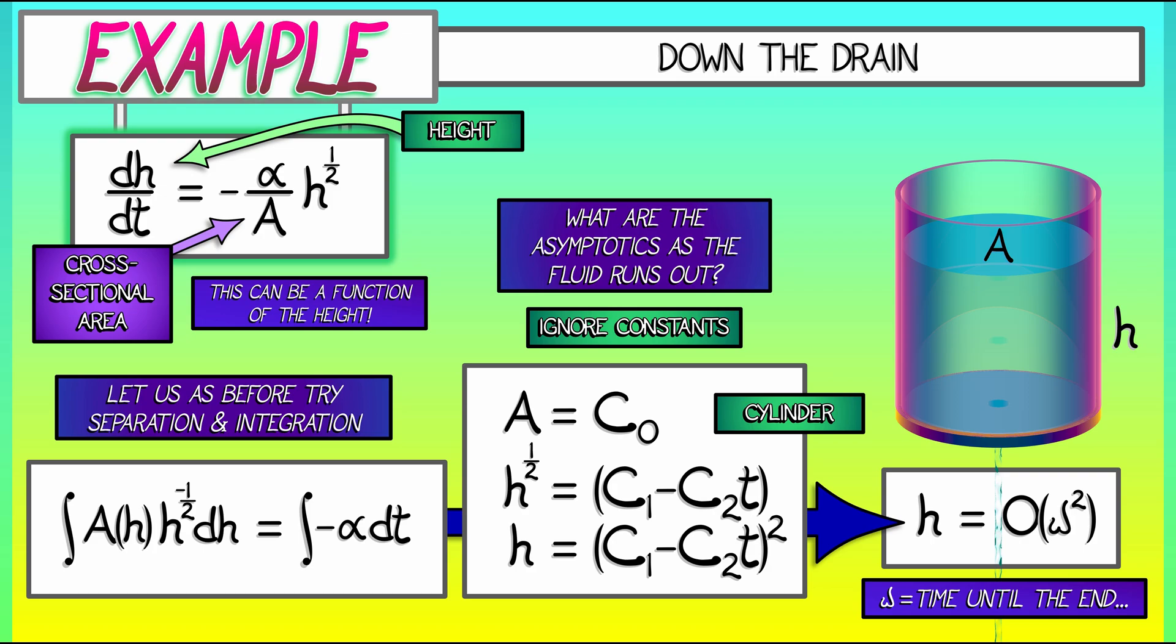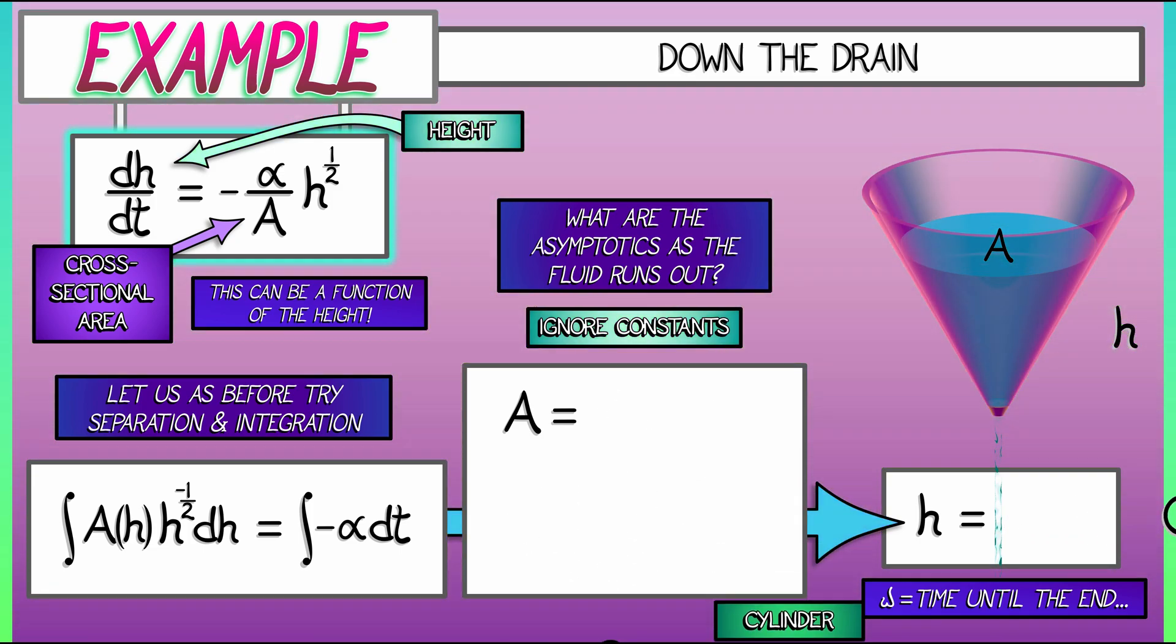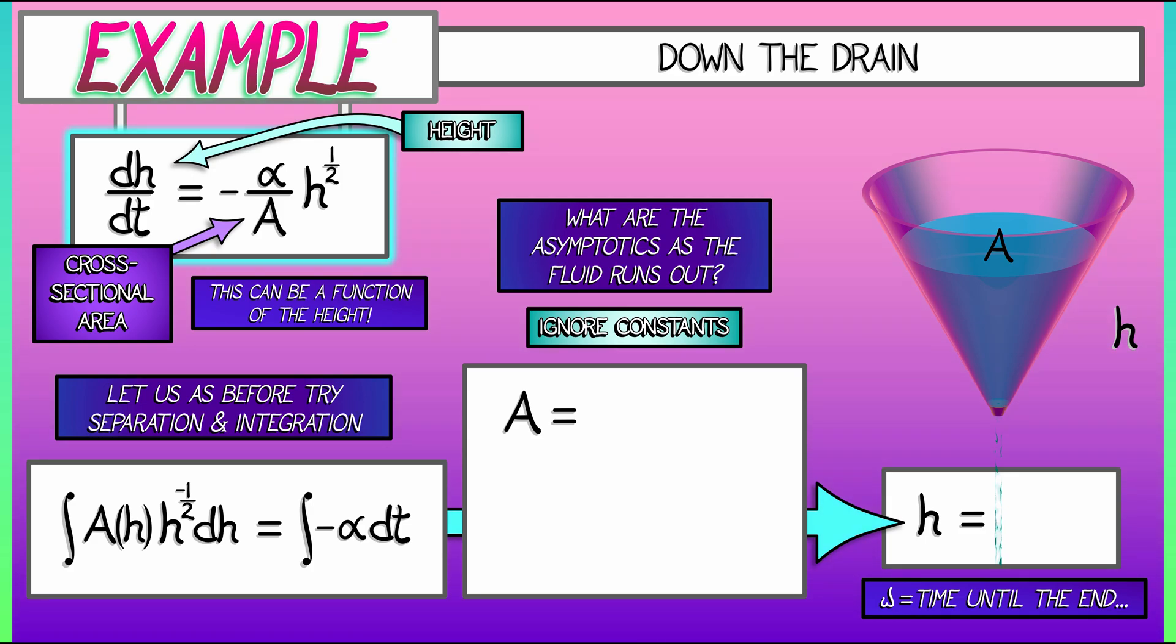Now compare that to what happens when instead of a cylindrical tank, we have a conical tank. Let's say that the tank comes to a point at the bottom, and that's where all the fluid is leaking out. What happens in that case? We need to discern that cross-sectional area in the limit as h goes to zero. I'm going to leave it to you to show that for a conical tank, that cross-sectional area goes quadratically in h. It's some constant c_0 times h squared.